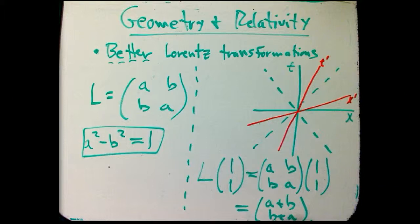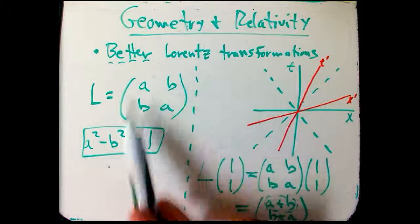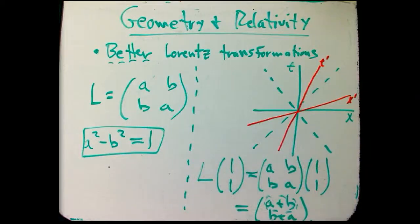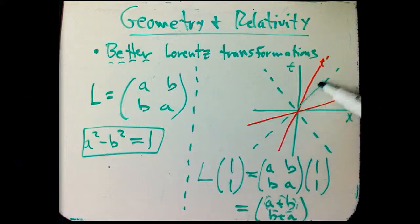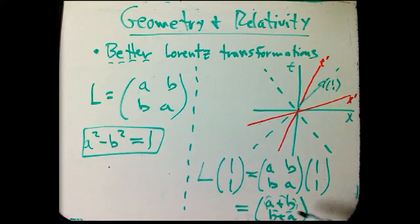But we can get a lot more out of it by saying this number, the sum of these, each row or each column, is starting to look like a very interesting thing to measure. In fact, what it measures is given a null vector described as 1, 1 in the xt coordinates, it describes the x prime, t prime observer's view of what that vector is. It's got the same structure that the top and bottom are the same, so it's a null vector. But the components have changed to a plus b.